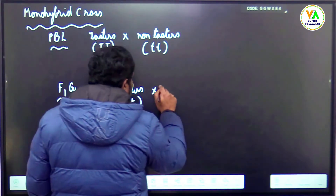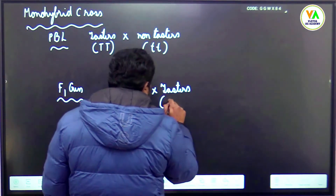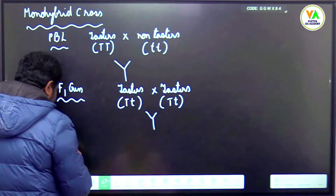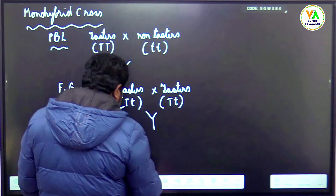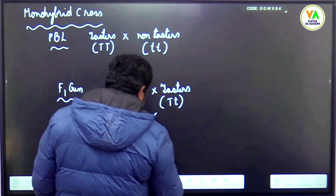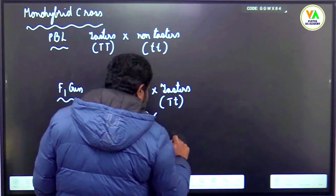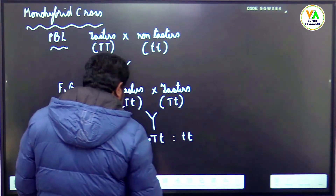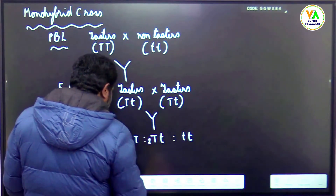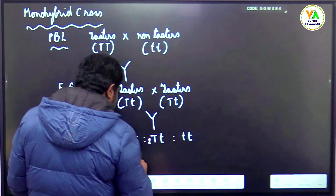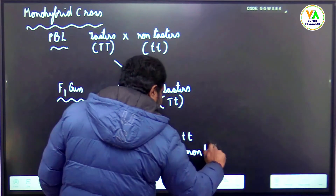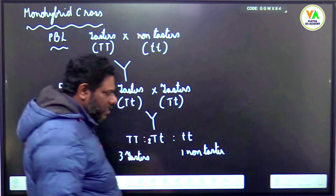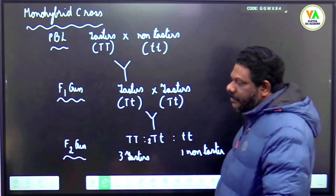If you cross two F1 tasters (Tt × Tt), then in the F2 generation you get: capital T capital T (TT), two capital T small t (Tt), and one small t small t (tt). So you get three tasters to one non-taster — the 3:1 ratio. This is a monohybrid cross in human beings.